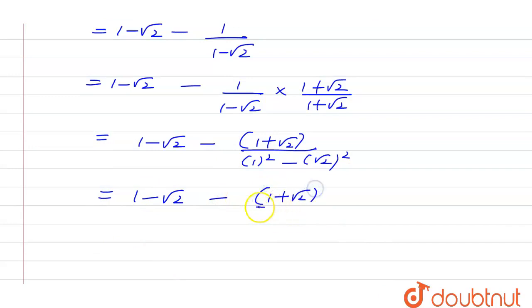So minus minus plus, 1 plus root of 2. So root 2 will be cancelled by root 2. 1 plus 1 will be 2.